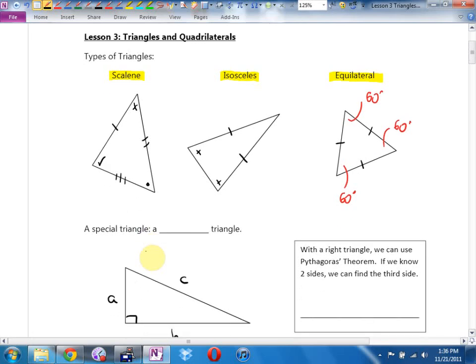And then we have one more special triangle. A right triangle. A triangle with a right angle.